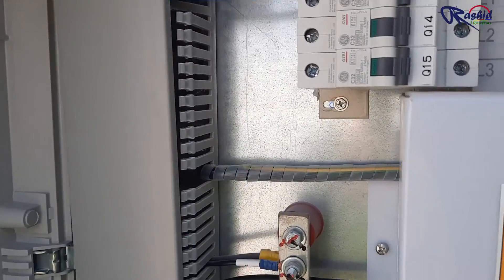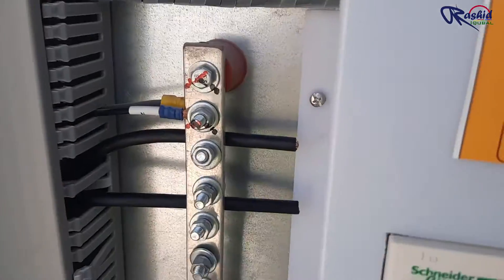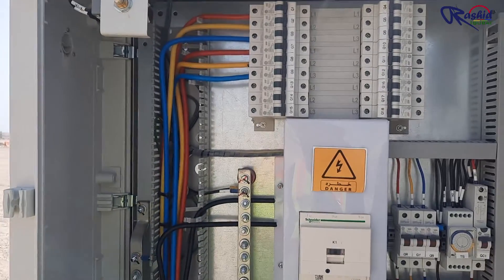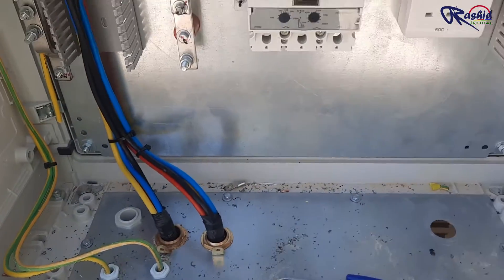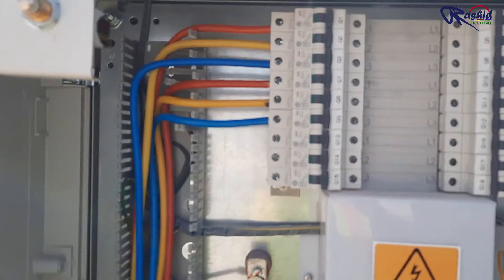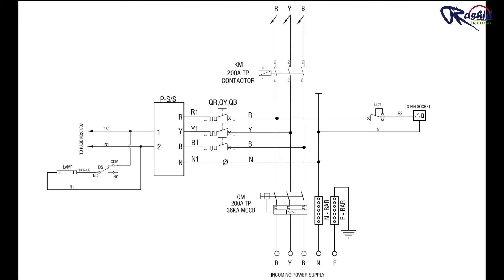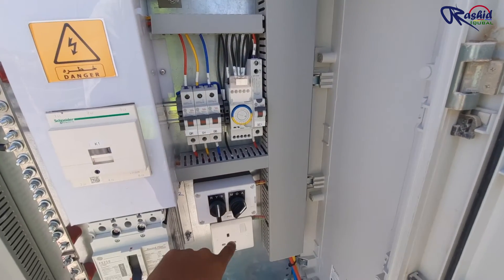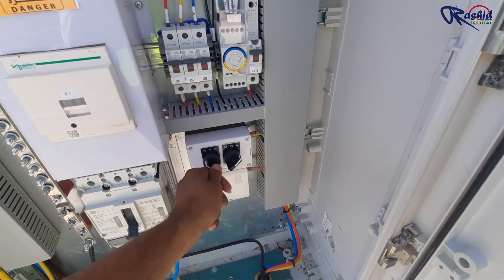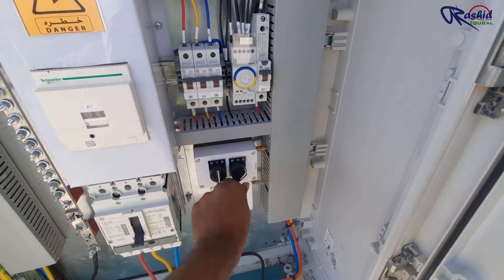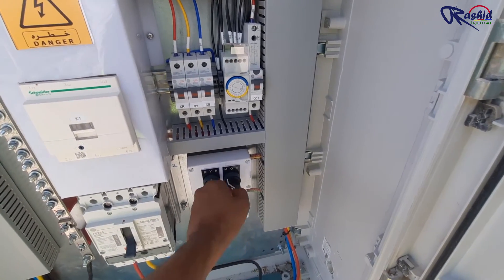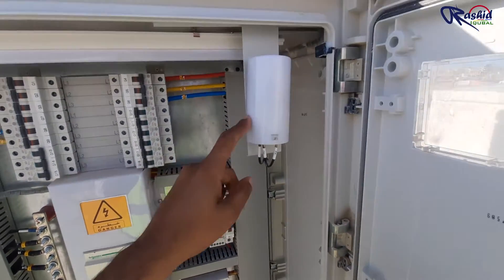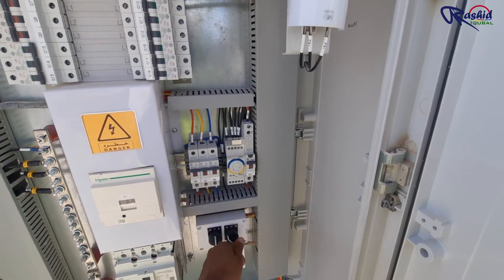Now let me show the wiring termination of this feeder pillar. These are the outgoing cables connected to the street lights. This is an auxiliary power supply for the control circuit, and here is the RCCB connected to the switch socket, which is installed here for maintenance purposes. This is a phase selector switch for control wiring and this is an auto/manual selector switch. If we flip the knob towards auto mode, the system will work through the timer and photocell, while in manual mode the contactor will directly energize and the street light will turn on.